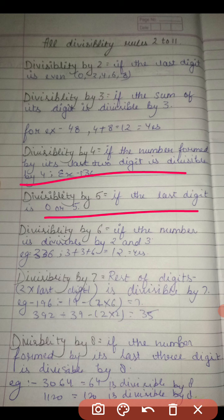You can take an example of 336. 3 plus 3 plus 6 equals 12. It is divisible by 2 also and 3 also, so it is also divisible by 12.